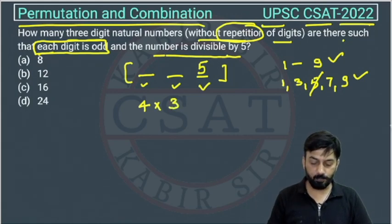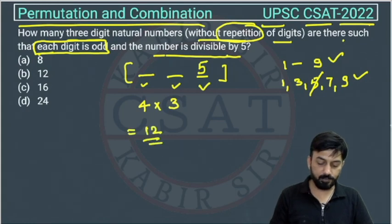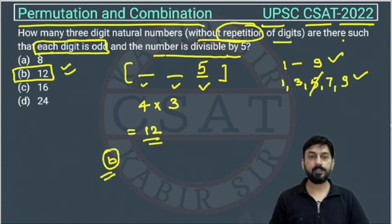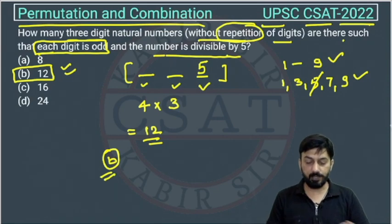The total possibilities are 4 × 3 = 12, so the answer is option b. This is a very easy question, just we have to understand the language of the question.